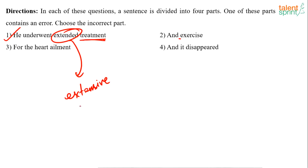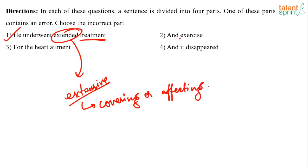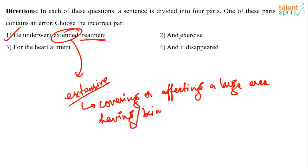What is the meaning of extensive? Extensive means covering or affecting a large area, basically having or being in large amount. That is the meaning of extensive. So the error is in part one — it should be extensive.